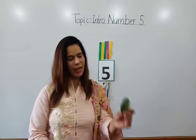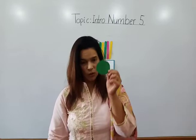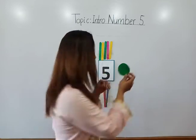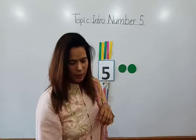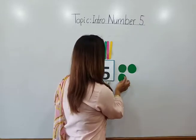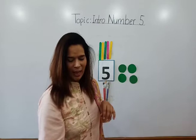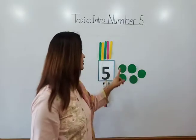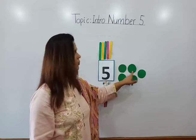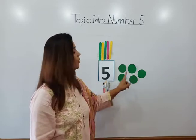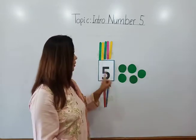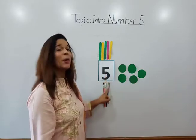Now see, I have circles. One circle, 2 circles, 3 circles, 4 circles, and 5 circles. How many circles? 5 circles! Let's count them again: 1, 2, 3, 4, 5. Very good! So we have 5 ice cream sticks, 5 circles, and 5 paint brushes. Very good!